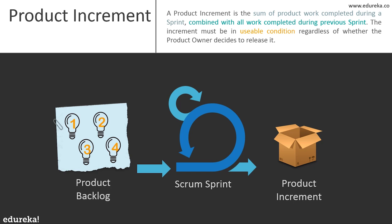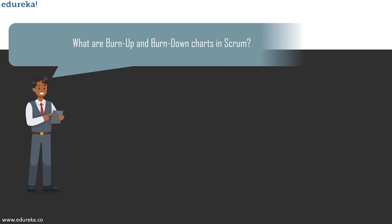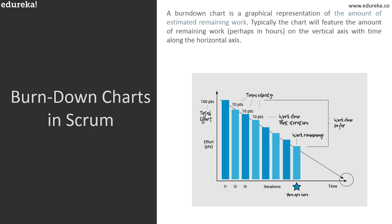Apart from the three main artifacts, Scrum also uses burn down charts and burn up charts to trace project progress. The burn up chart illustrates the amount of work completed, while the burn down chart illustrates the amount of work remaining to complete the project. Efforts are measured in terms of user stories, not in time units like hours or minutes.